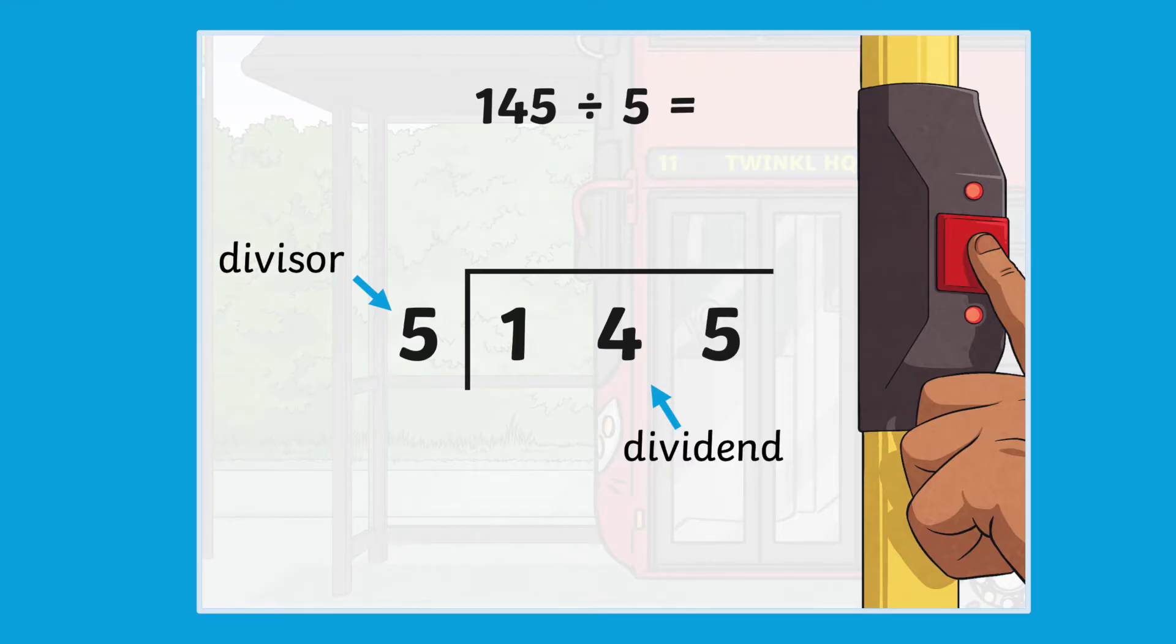With a memorable image of a bus stop to help children remember what the written method of short division is, we first have the divisor, which is the amount of equal groups a number will be shared or divided into, and then we have the dividend underneath the line. This is the number which is about to be shared equally.